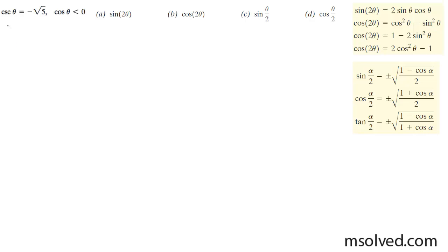So sine theta is going to be equal to negative 1 over the square root of 5. For cosine, we use the square root of (√5)² minus 1², which is the square root of 4, which is 2. So cosine of theta, because it's negative, is going to be equal to negative 2 over the square root of 5.